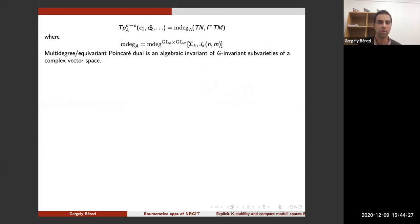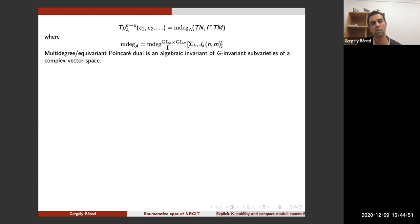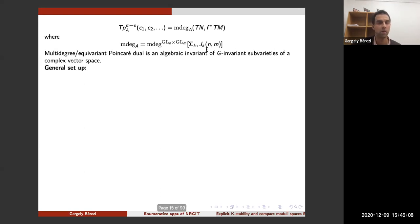A little more is true: it was shown by Haefliger and Kosiński that this dependence on the Chern numbers is very restricted. Specifically, the class Z(f) is a polynomial in the Chern classes of the difference bundle. That's why we call this TP_A — the Thom polynomial — a polynomial in these Chern classes. This universal polynomial m†_A is called the multi-degree, or equivalently the equivariant Poincaré dual, of the class Σ_K corresponding to algebra A_K in the case of a Morin singularity. This Σ_K is a GL_n times GL_m invariant subset of the jet space J^K(N,M), and we can define this equivariant Poincaré dual, which will be a polynomial in m+1 variables.